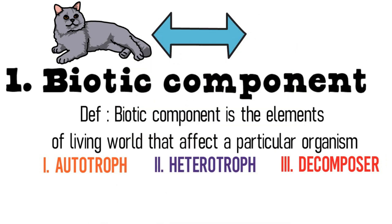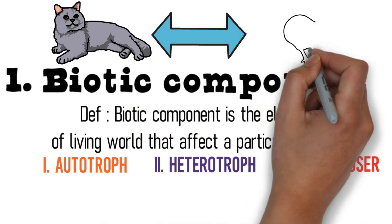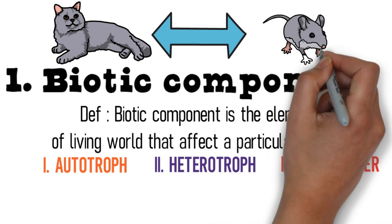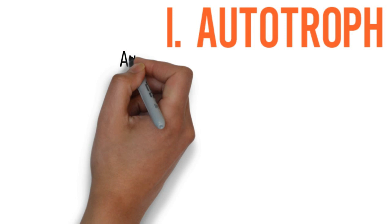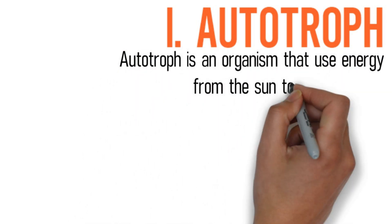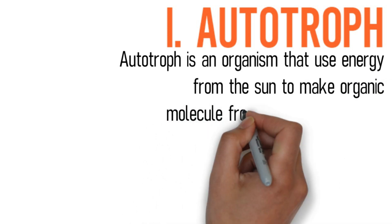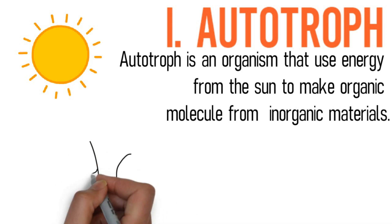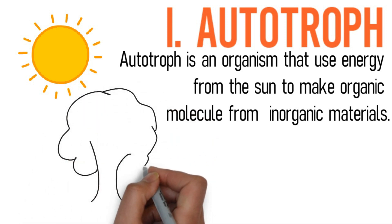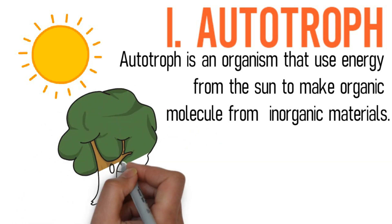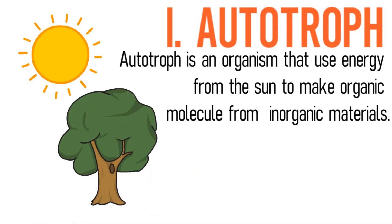Let us discuss each biotic component one by one. The first biotic component is autotroph. An autotroph can be defined as an organism that uses energy from the sun to make organic molecules from inorganic materials. We can also define autotroph as a producer that comprises all photosynthetic organisms such as plants, seaweed, and any organism that has chlorophyll.